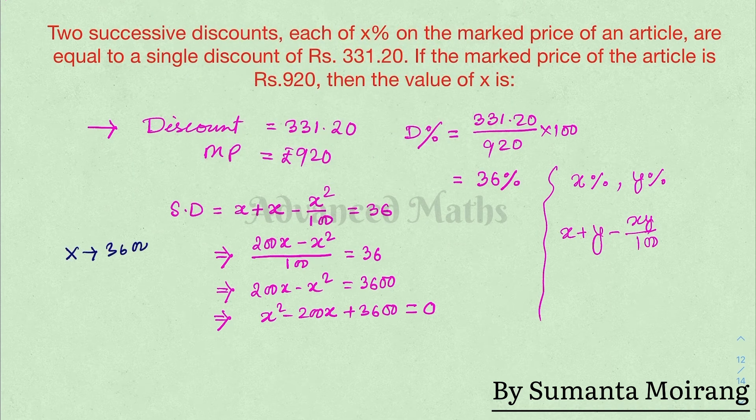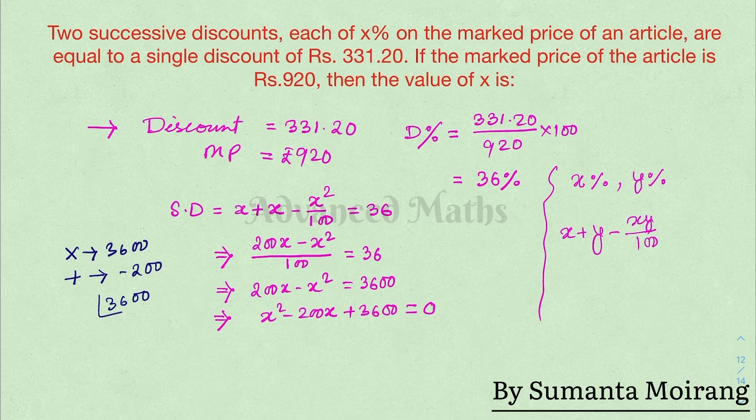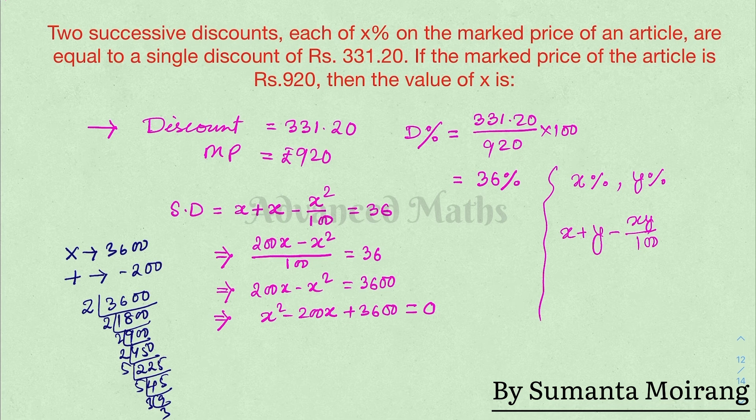The coefficient is minus 200, and the constant term is 3600. We need to find two numbers that multiply to 3600: 1800, 900, 225 times 5.